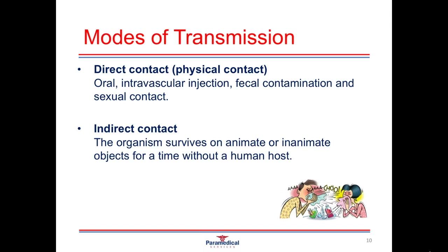Another mode of transmission is through what's called indirect contact. This is where something has not immediately been passed from one body source to another. An example would be if somebody was to sneeze or cough an infectious agent onto a table surface, the infectious agent could live outside that host for a while, and another person would come along, touch that surface, and maybe wipe their nose, rub their eye, or touch their mouth — providing a portal for an infectious agent to enter their body. The organism needs to survive on an inanimate object for a time without a human host.